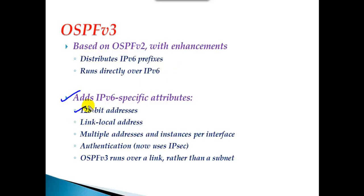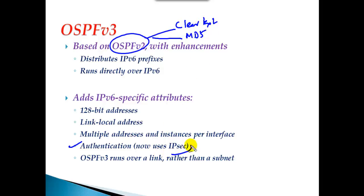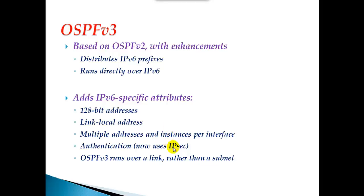OSPFv3 has specific attributes: it uses 128-bit addresses, supports link-local addresses, and allows multiple addresses on the same interface, which is not possible in IPv4. You can also have multiple instances of OSPF running on the same interface. OSPFv3 supports authentication using IPsec, whereas OSPFv2 supports clear text and MD5 authentication. OSPFv3 runs over a link rather than a specific subnet, meaning we enable the protocol under the interface instead of using network commands.